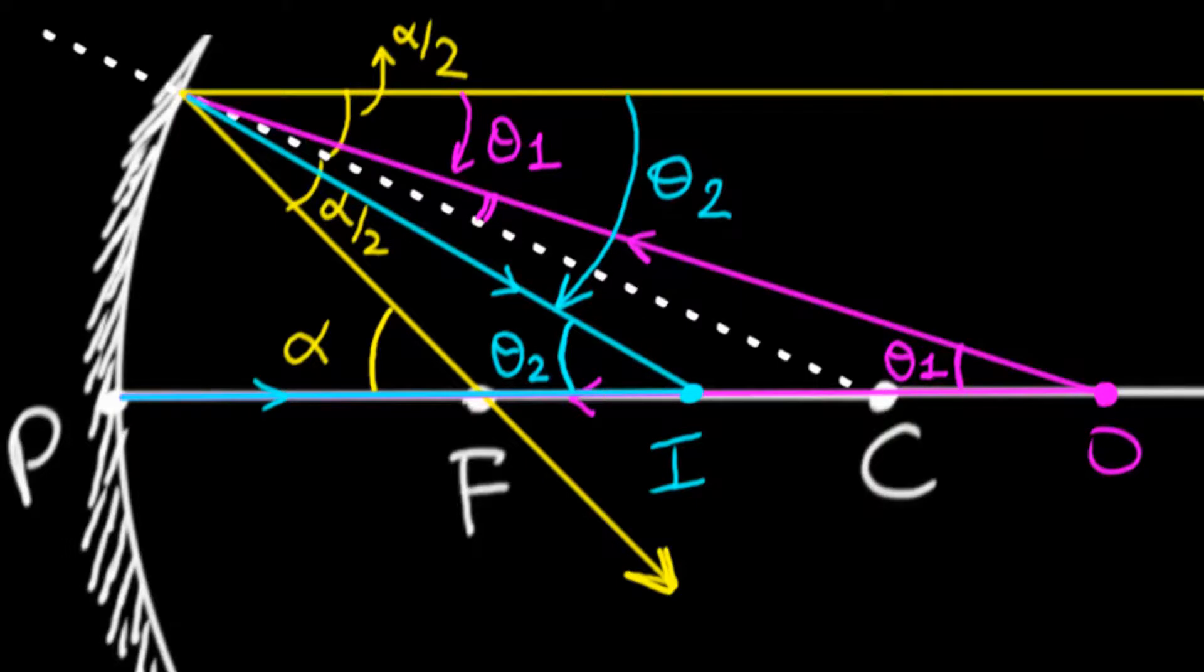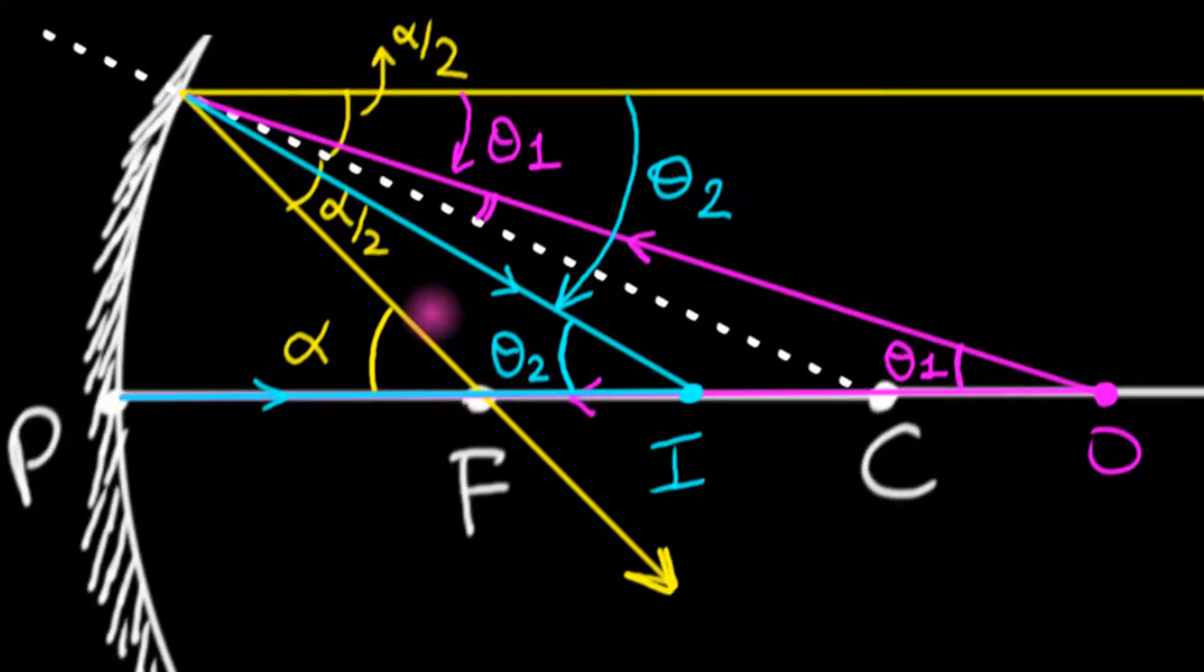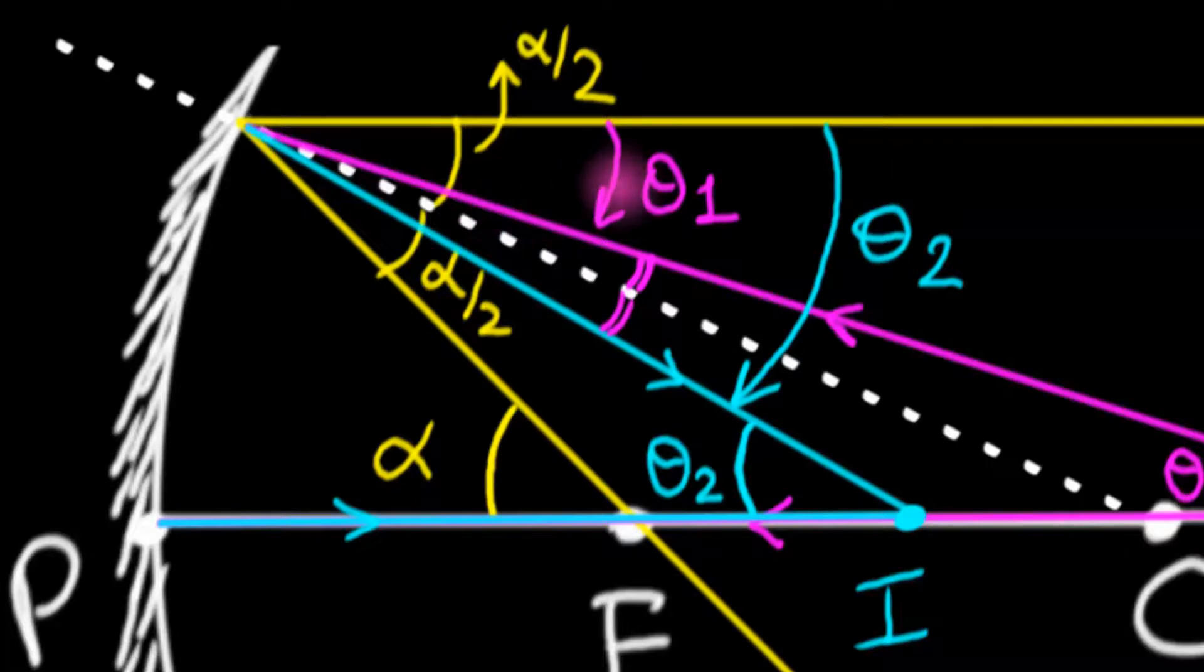Now comes the interesting part. And I want you to carefully follow me, because this is the last part of the derivation. We're almost done. Notice that if this is the angle of incidence, so this is the angle of reflection, and the angle of incidence is exactly equal to angle of reflection. However, notice that theta 1 plus this angle is alpha by 2. But this angle over here is also alpha by 2, and these two angles are equal to each other. From symmetry, I hope you can see, this angle must also be equal to theta 1.